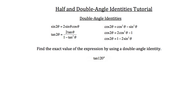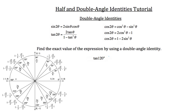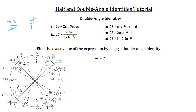Find the exact value of tangent of 120 degrees using a double angle identity. First, let me show the traditional method. Here's 120 degrees on the unit circle. To find the tangent, take sine of 120 degrees, which is root 3 over 2, divided by cosine of 120 degrees, which is negative 1/2. Multiplying by the reciprocal negative 2 over 1, the 2s cancel and we get root 3 times negative 1, which is negative root 3.